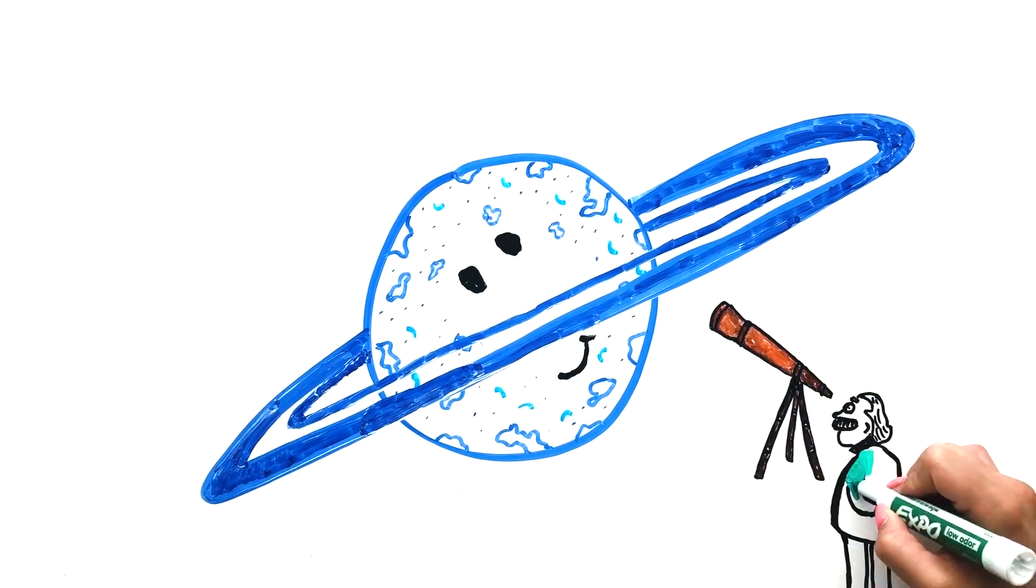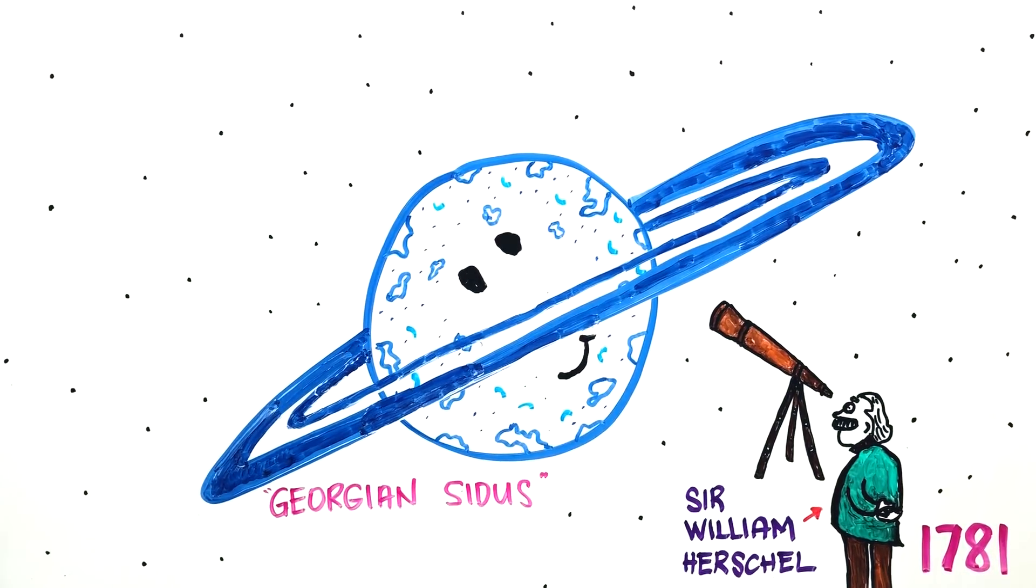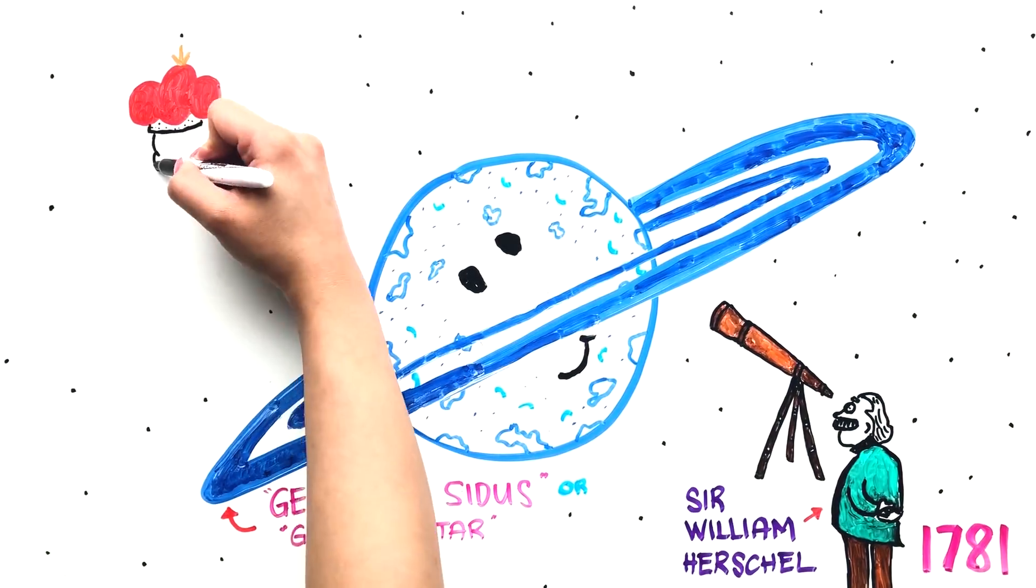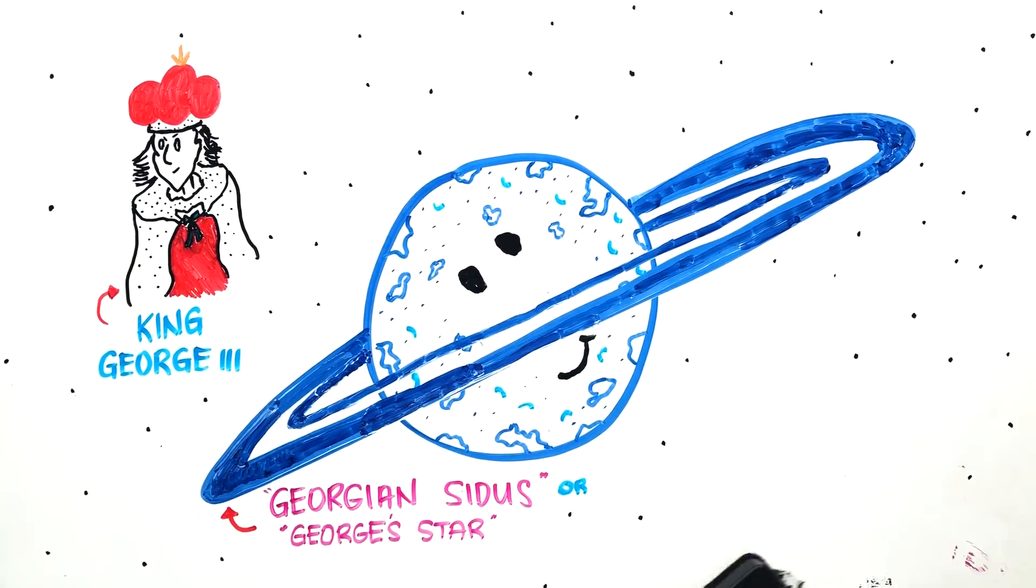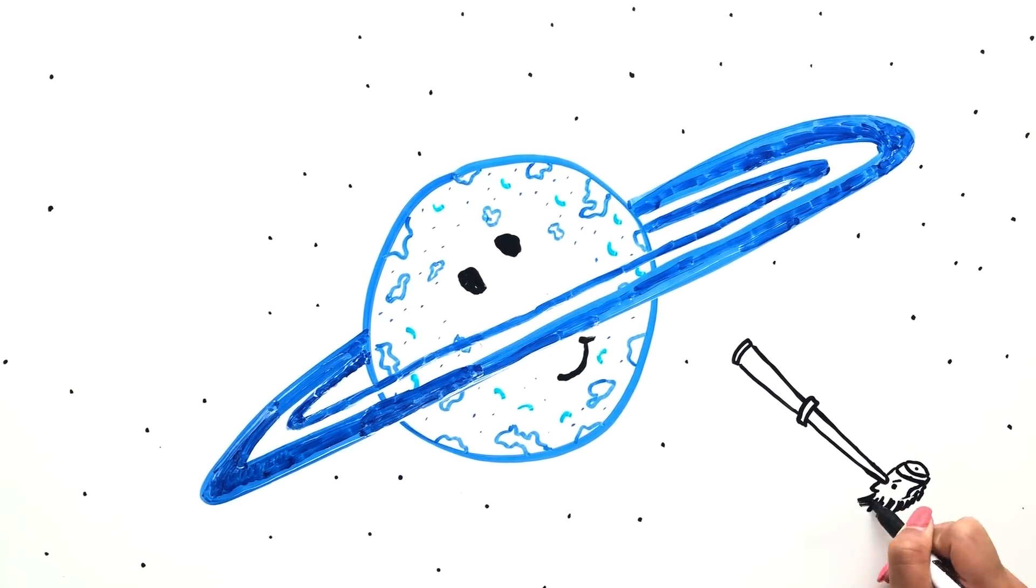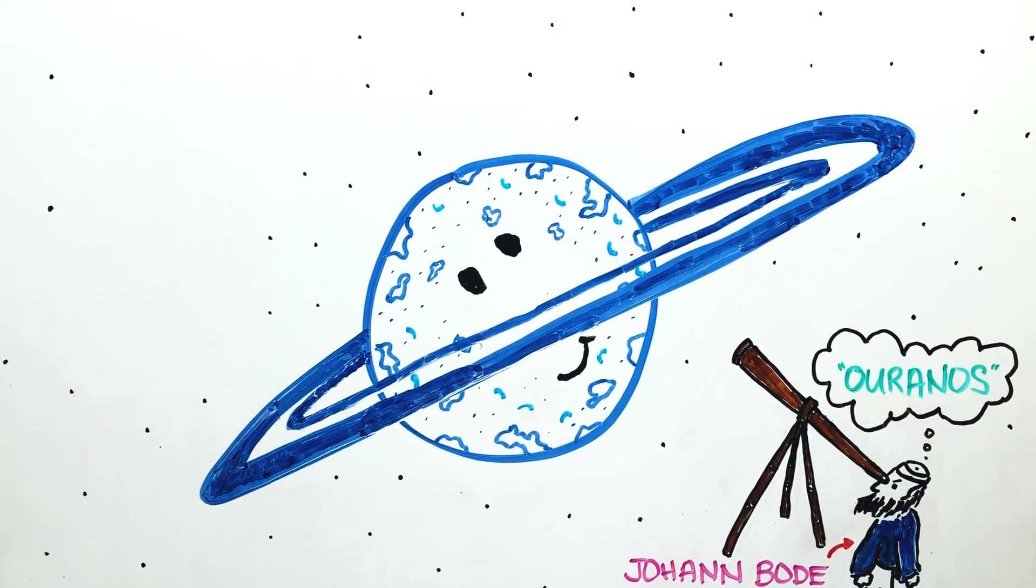Uranus was discovered by Sir William Herschel in 1781 and was originally named Georgian Citus, or George's Star, after King George III. A German astronomer named Johann Bode changed its name to Uranus, and it is the only planet named after a Greek god.